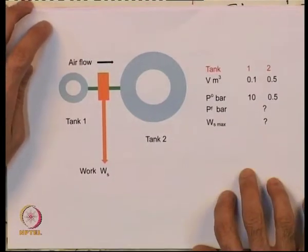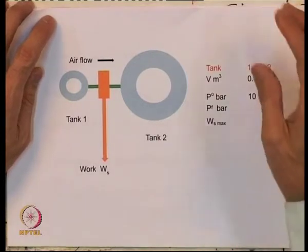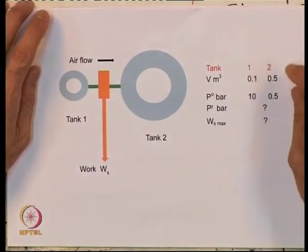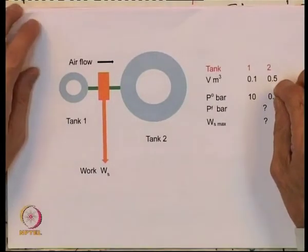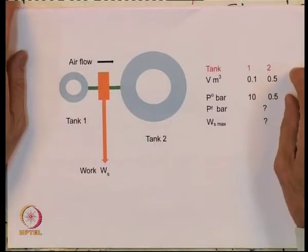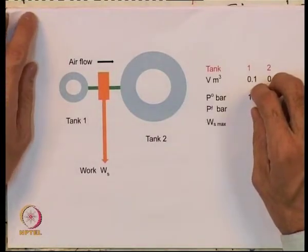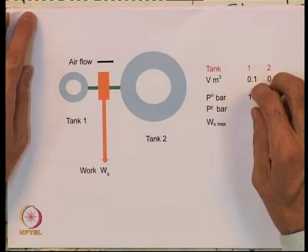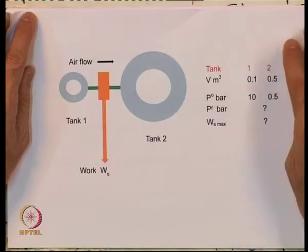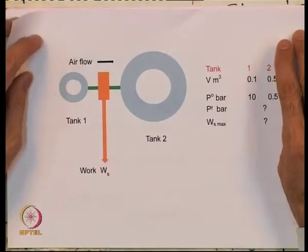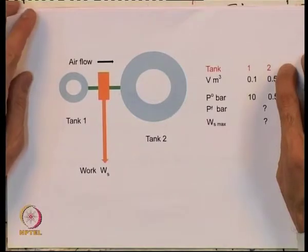The initial pressures are given; you can calculate the final pressure and the maximum work obtainable from the system. There are two reasons to do this problem: first, to show how the calculation is done, and second, to show that depending on the definition of the system, the calculation of work can be somewhat complicated or very simple. It is important in thermodynamics to always choose your system, and in general to choose it as large as possible without leaving out the detail you are looking for.